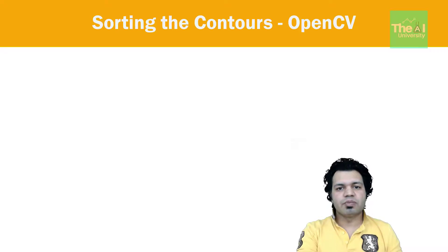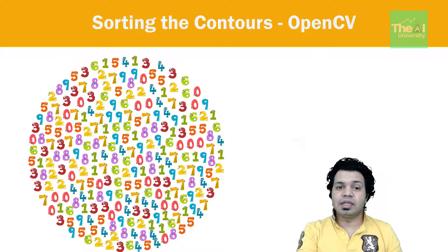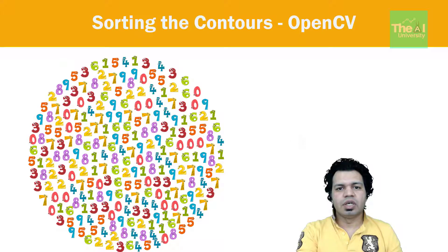On the other hand, sorting by spatial position helps us in sorting characters left or right. For example, if you have numeric digits in an image, sorting by spatial position helps in sorting these numeric numbers left or right. Now let's see how we can implement it using OpenCV.